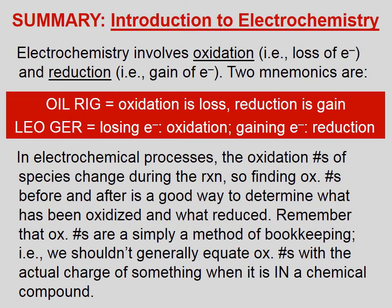Let's summarize. Electrochemistry involves oxidation (loss of electrons) and reduction (gain of electrons). Two mnemonics are OIL RIG — oxidation is loss, reduction is gain — and LEO-GER — losing electrons is oxidation, gaining electrons is reduction. In electrochemical processes, the oxidation numbers of species change during the reaction, so finding oxidation numbers before and after is a good way to determine what has been oxidized and what has been reduced. Remember that oxidation numbers are simply a method of bookkeeping — we shouldn't equate oxidation numbers with the actual charge of something in a chemical compound.